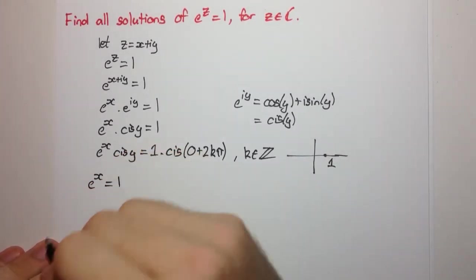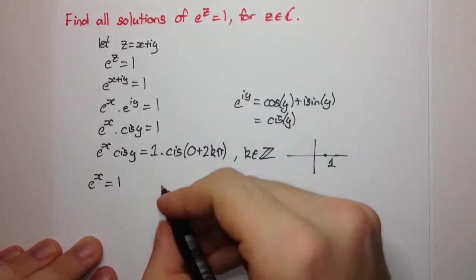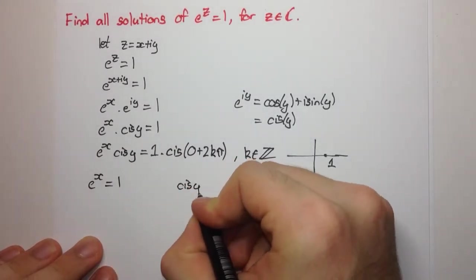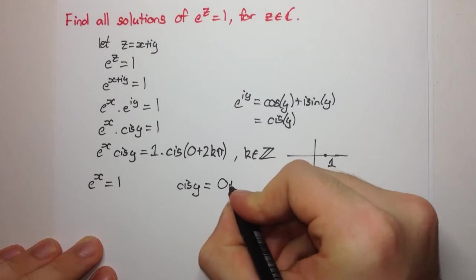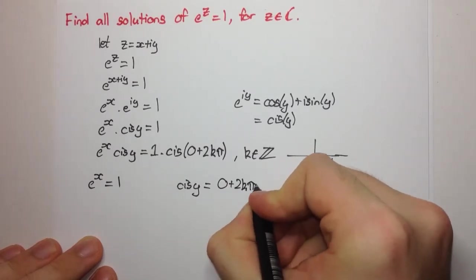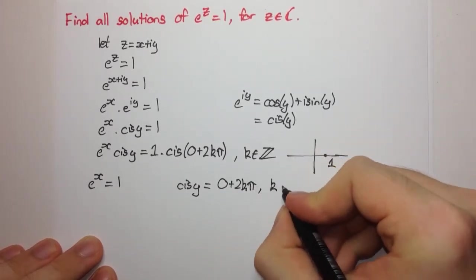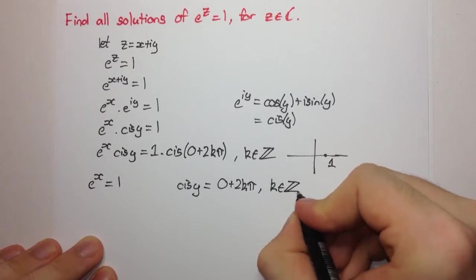So e to the x is equal to 1, and we have y is equal to 2kπ for integral k.